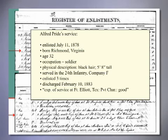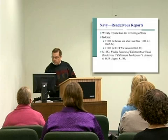He was discharged from service on February 10, 1883. His expiration of service took place at Fort Elliott, Texas. He was a private at the end of his service and his character as a soldier at the time of his discharge was listed as good. So he'd probably had a fairly typical service as a soldier during his time in the Army.